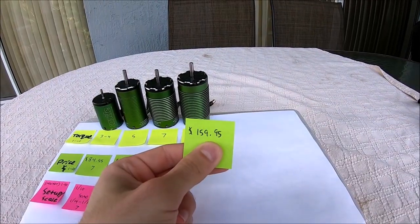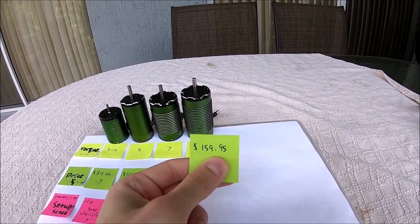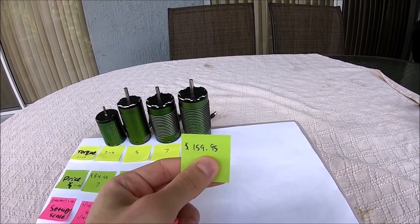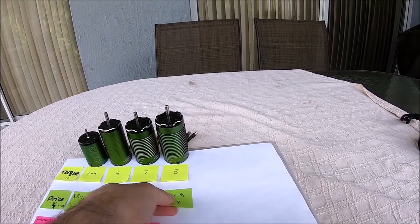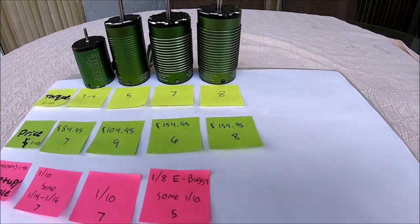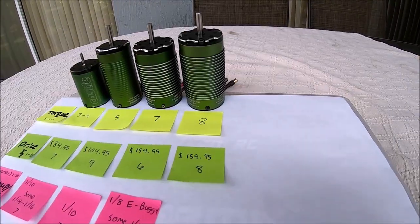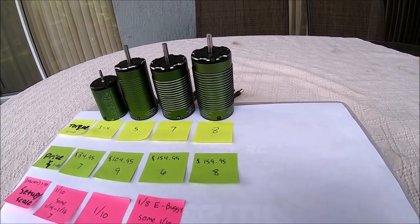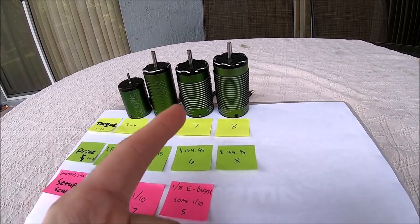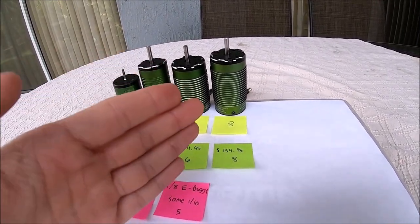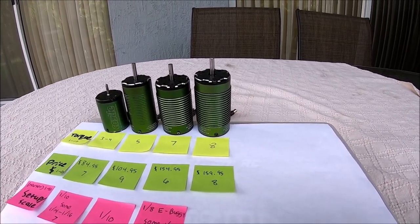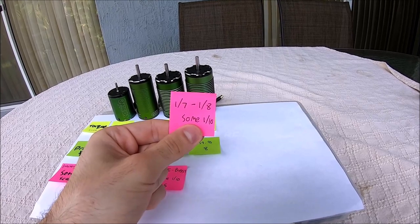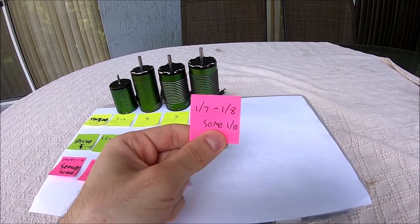Coming in at only $5 over the 1512, at $159.95 USD, I'm going to give the 2200 a 10. Now that is significantly higher than the 1512. You could obviously still bash with it without having to gear to the moon because the KV is a lot lower in both of them, so you're going to have a better medium of power and accessibility of what your setup needs with this motor.